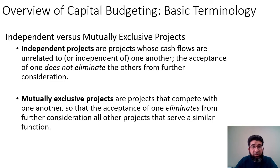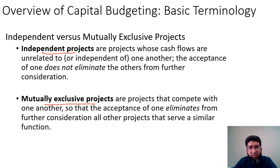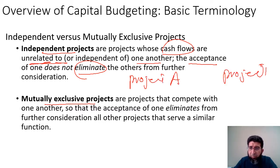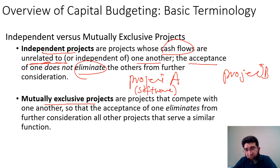There are different types of projects. These are independent projects versus mutually exclusive projects. Independent projects are projects whose cash flows are unrelated to one another — the acceptance of one does not eliminate the other from further consideration. For instance, Project A involves development of software to make inventory management more efficient, while Project B involves machine repair to help operations work more efficiently.